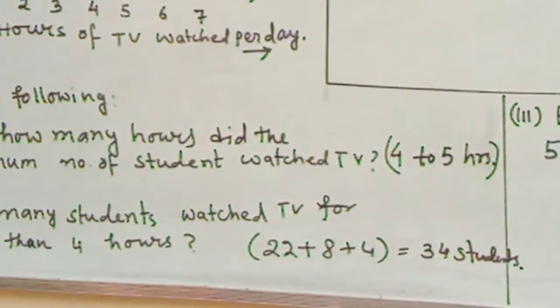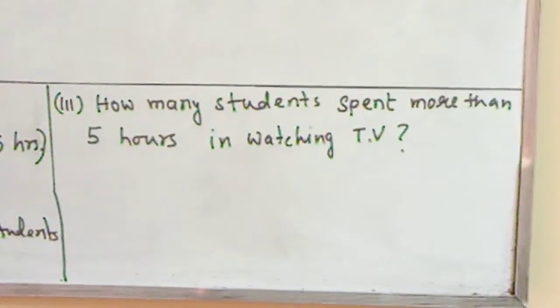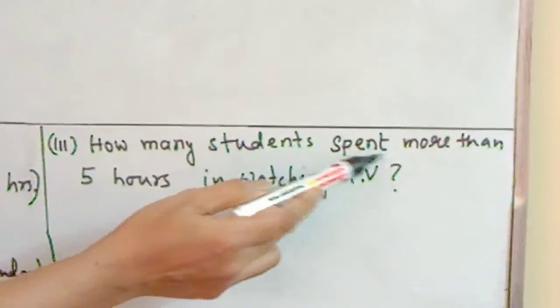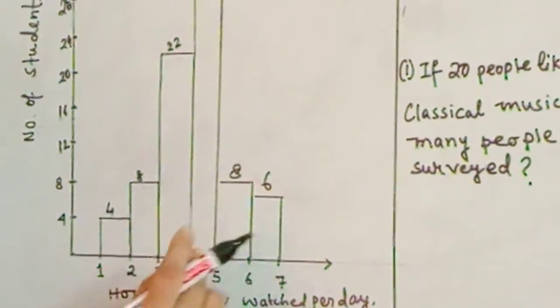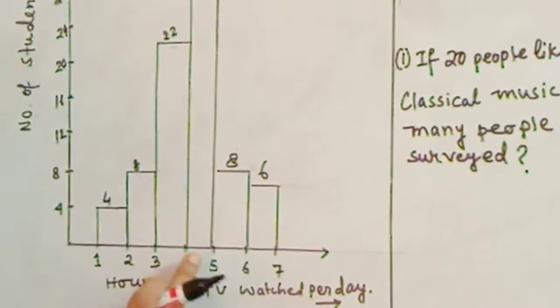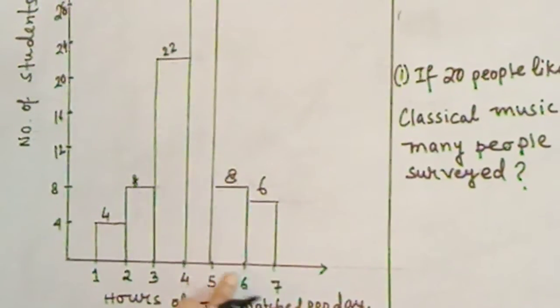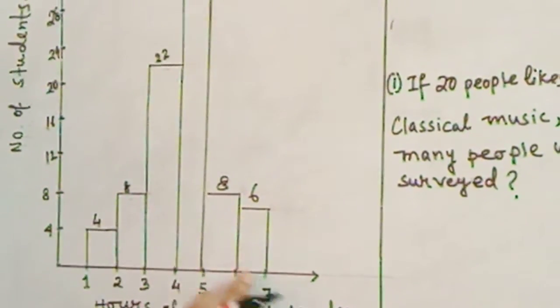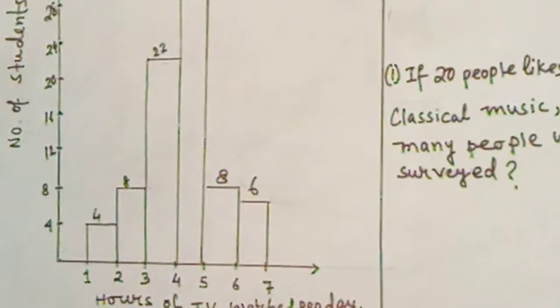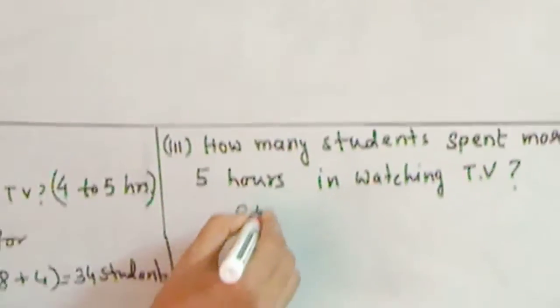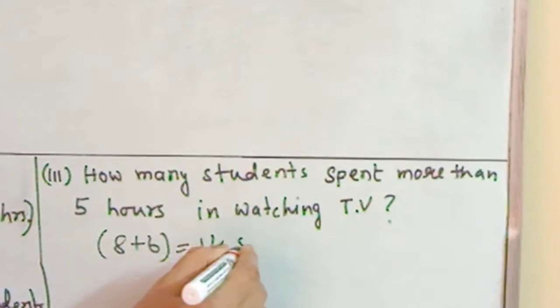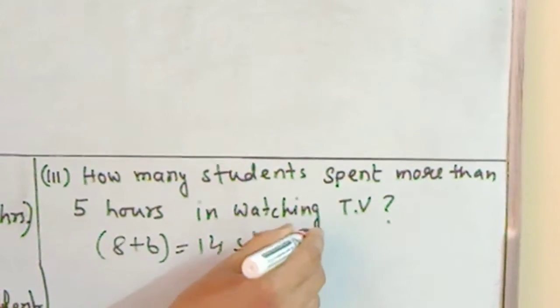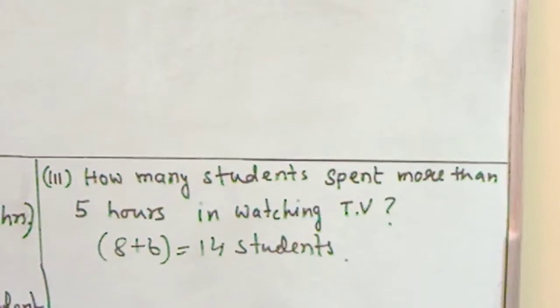Next question is how many students spent more than 5 hours watching TV? More than 5 hours means this is the minimum lower limit and this is the upper limit. So more than 5 hours means 8 plus 6, that is 14 students.